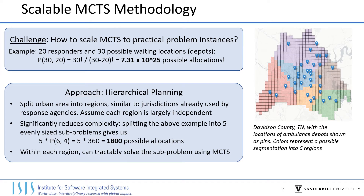For example, in a city with just 20 responders and 30 waiting locations, which we refer to as depots, there are on the order of 10 to the 25 possible allocations to decide between at each decision epoch. A problem of this size is not tractable to solve in real-time.